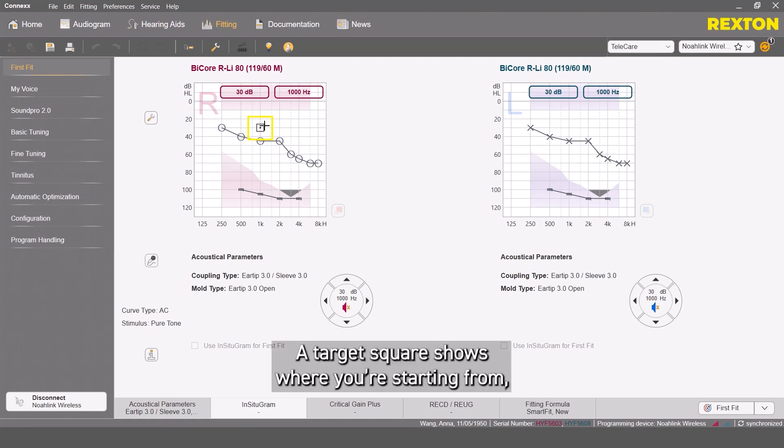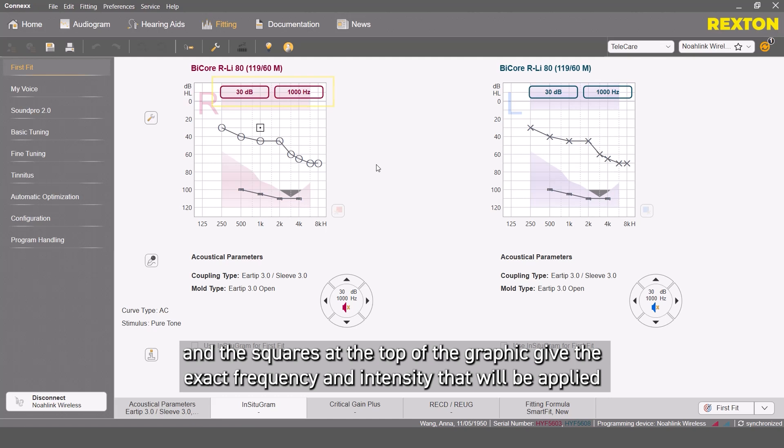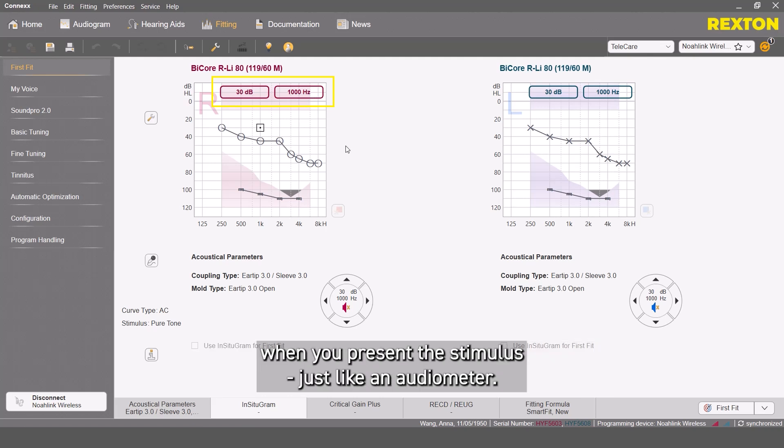A target square shows where you're starting from, and the squares at the top of the graphic give the exact frequency and intensity that will be applied when you present the stimulus, just like an audiometer.